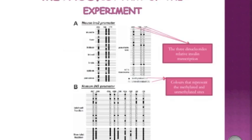In the first part of the experiment, we examined the DNA methylation pattern of the insulin gene in human and mouse beta and non-beta cells. In part A, we looked at the INS2 promoter in the mouse and found three CpG dinucleotides related to transcription at three different sites: one at minus 414, one at minus 182, and the last one at minus 171.